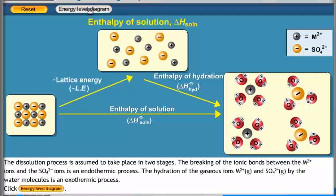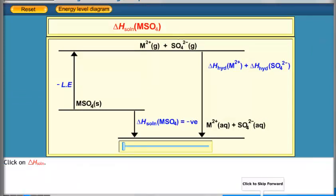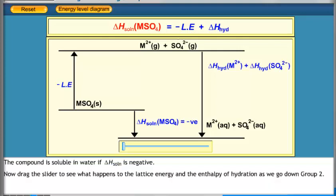Click the energy level diagram button. Click on delta H solution. The compound is soluble in water if delta H solution is negative. Now drag the slider to see what happens to the lattice energy and the enthalpy of hydration as we go down group 2.